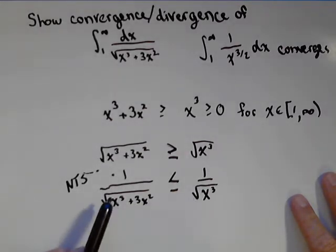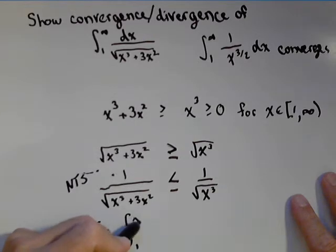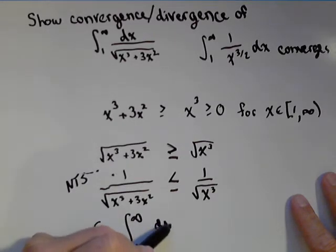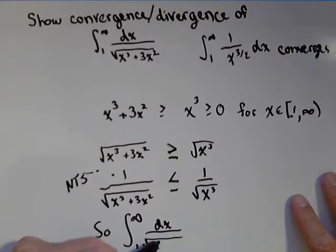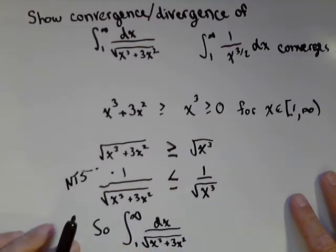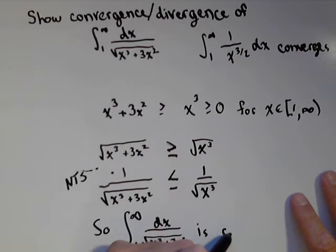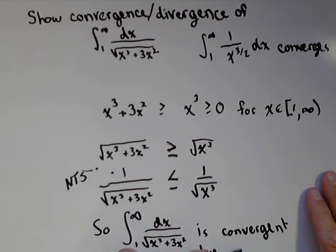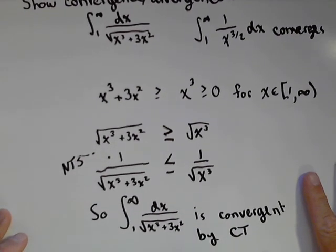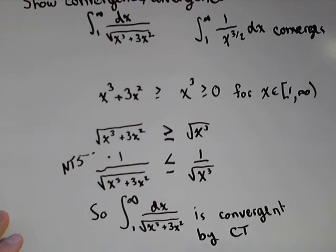So, we've now shown that something we know is convergent. Its integrand is greater than this integrand. So, we can draw our conclusion, which is our integral one to infinity of dx over square root of x cubed plus three x squared is convergent. And we always want to give our reason, which in this case is by comparison test. And that's how we can use the comparison test to show an improper integral is convergent. It doesn't show what it's convergent to, but it does show us that it is convergent.